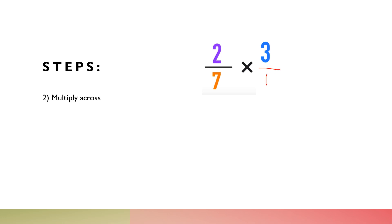Step 2: now that you have two fractions, all you have to do is multiply across. Numerator times numerator, or top with top, and bottom with bottom—denominator times denominator. Which is the same as 2 times 3 equals 6, and 7 times 1 equals 7.